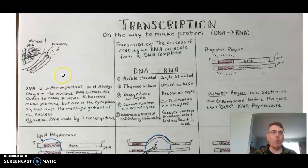Let's go over why transcription is important. It starts with the DNA. DNA is super important, but it always stays in the nucleus. We're up here in the nucleus - that's where the DNA stays. It cannot get out. The DNA contains all the information to make proteins.